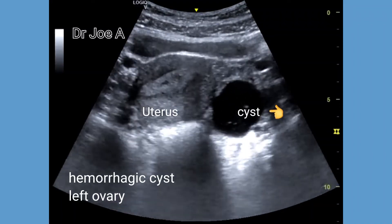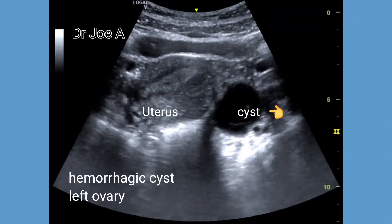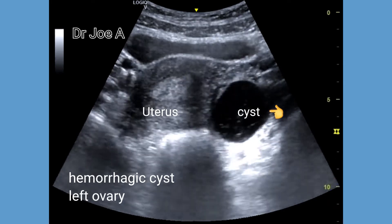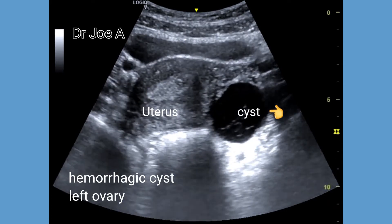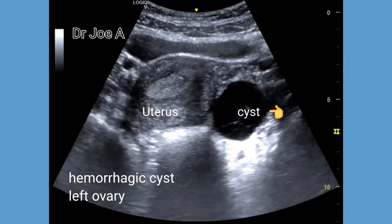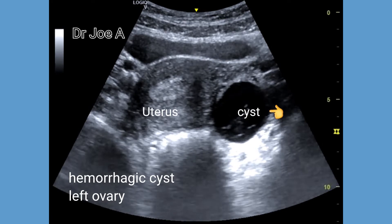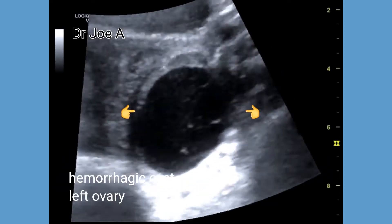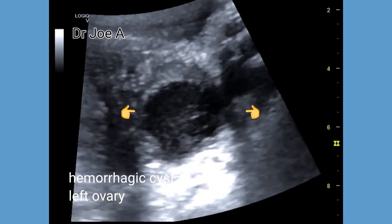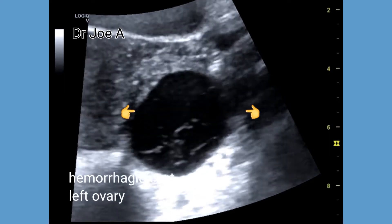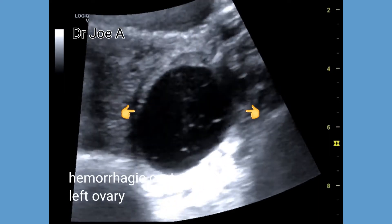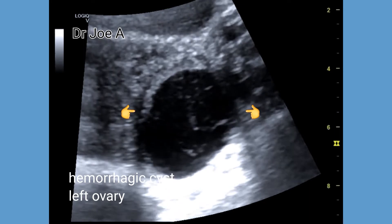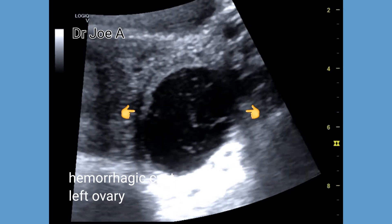This patient shows a hemorrhagic cyst of the ovary. Hemorrhagic cysts are formed most commonly by bleeding or hemorrhage into the corpus luteum following ovulation. Ultrasound shows a cyst with a lace-like or reticular pattern within the cyst.